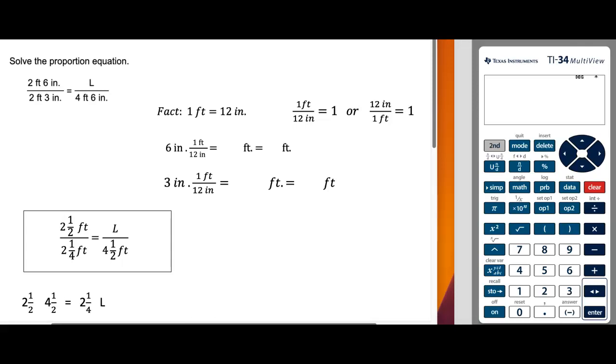This problem is concerning solving the proportion equation, and this is in response to another student question. We have 2 feet 6 inches is to 2 feet 3 inches as L is to 4 foot 6 inches.